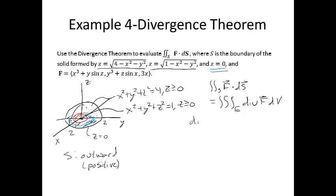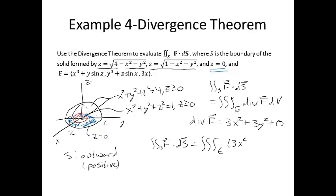So we need to calculate the divergence of the vector field. The partial derivative of the first component with respect to x is 3x². The partial derivative of the second component with respect to y is 3y². The partial derivative of the third component with respect to z is 0. So the surface integral will be the triple integral over E of (3x² + 3y²) dV. Since our surface is comprised of spheres, it's convenient to switch to spherical coordinates.